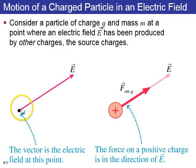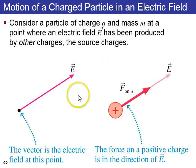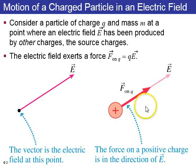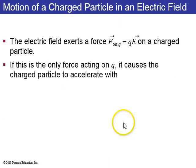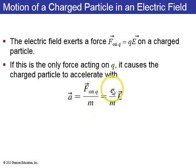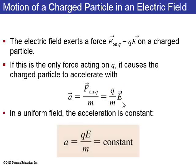When a charged particle with charge q and mass m is placed in a uniform electric field E — perhaps produced by a parallel plate capacitor — there is a force on q in the direction of the field (opposite if q is negative). If this is the only force, Newton's second law gives acceleration a equals qE over m, a constant since the field is uniform.